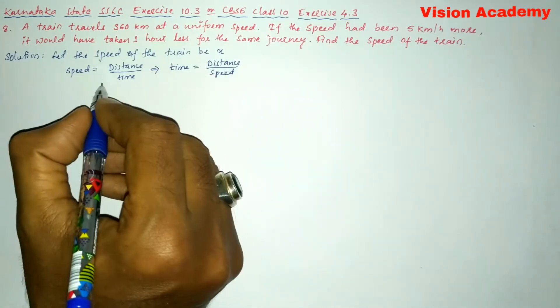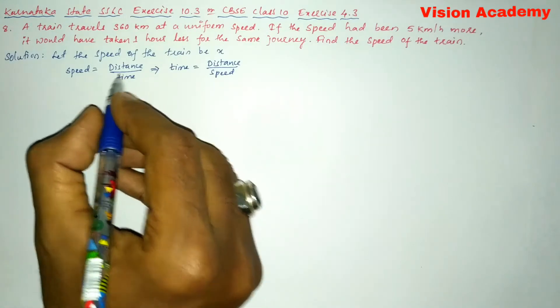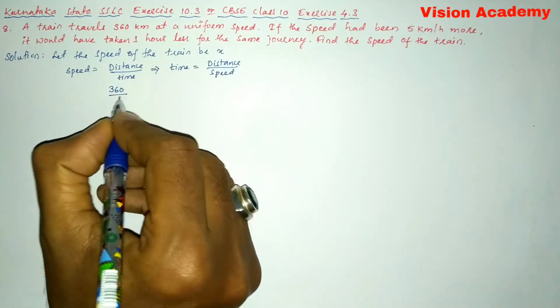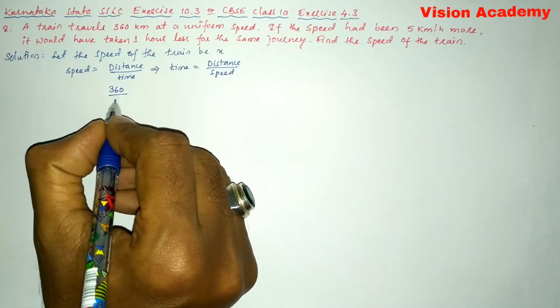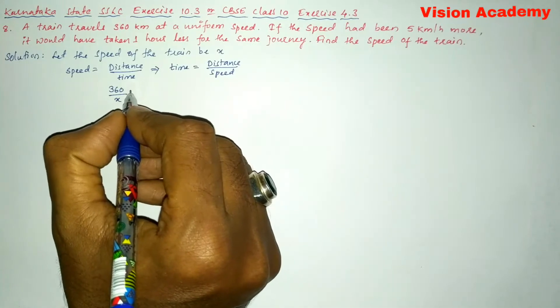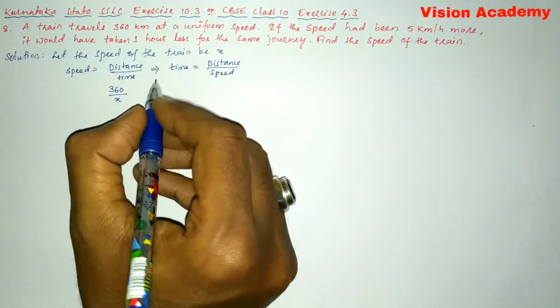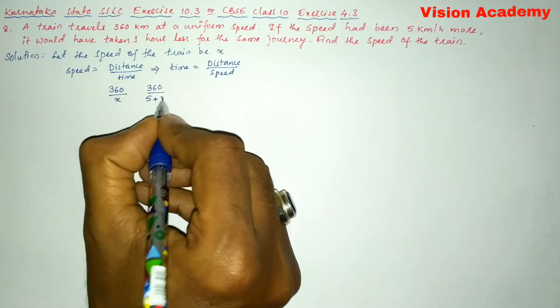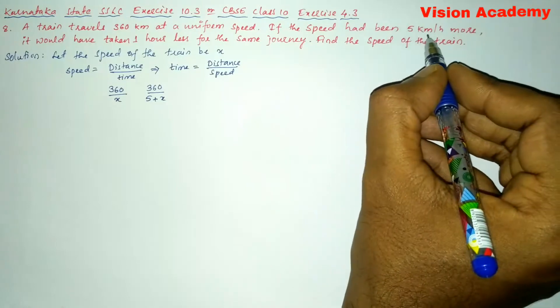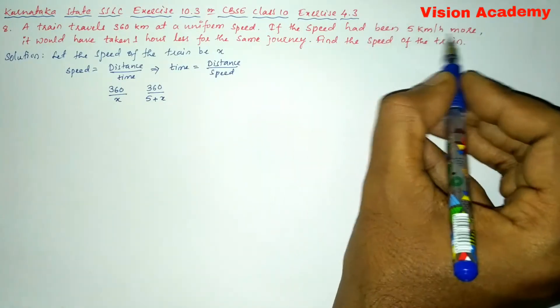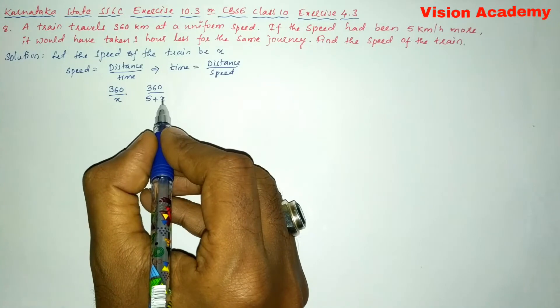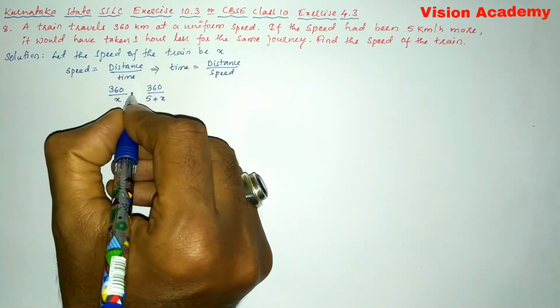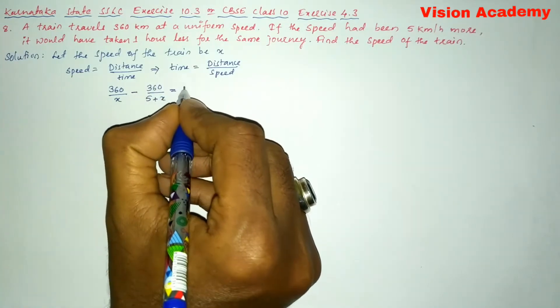So now here in the question they have given 360 kilometer at a uniform speed, so divided by x. Next, we will write 360 divided by 5 plus x, because if speed had been 5 kilometer per hour more, that is 5 plus x. So it would have taken one hour less, so that is minus is equal to 1.